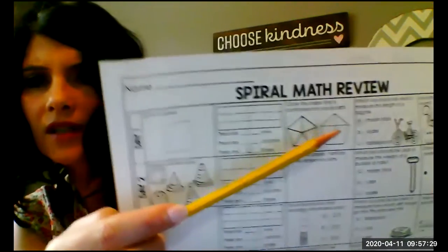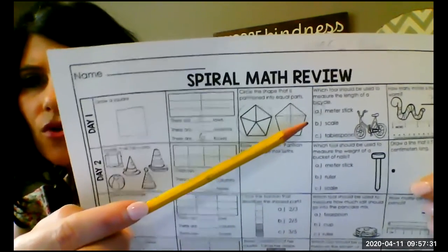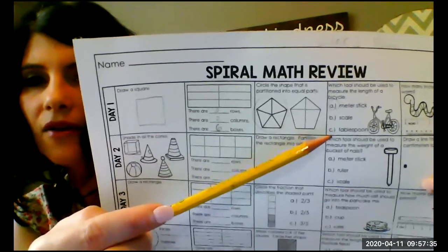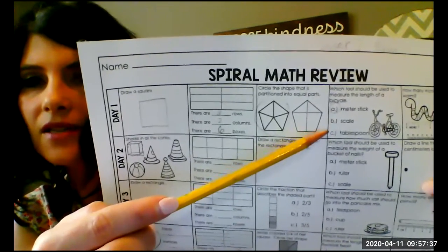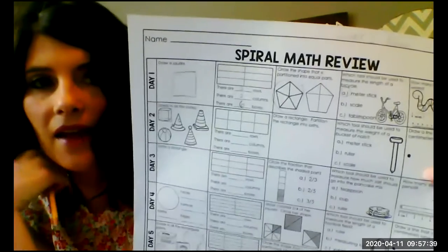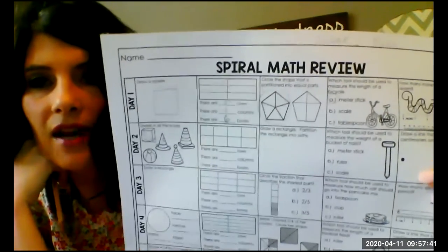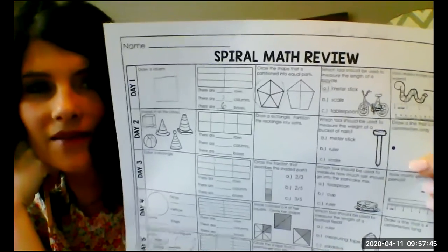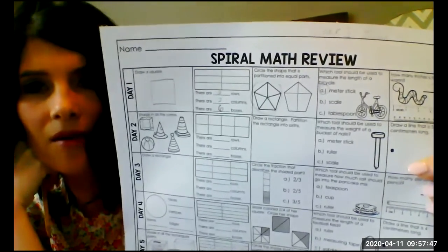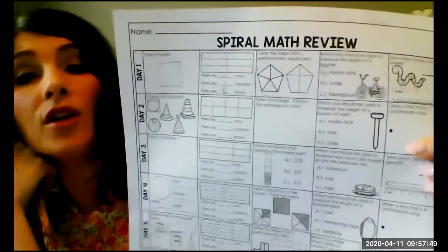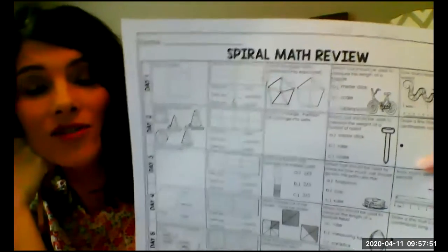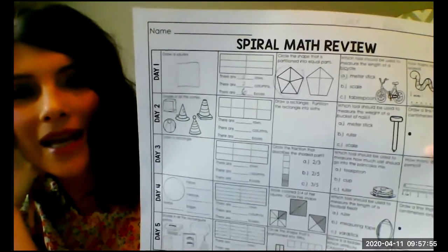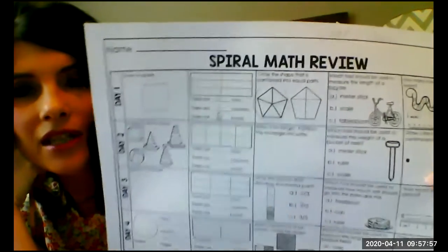The next one says which tool should be used to measure the length of a bicycle? I would not use a scale because, if you remember last week, a scale measures weight — like fruits and vegetables, the weight of something. When you go to the doctor's office and the doctor weighs you, you stand on a scale. So that has to do with weight; we're not measuring weight.